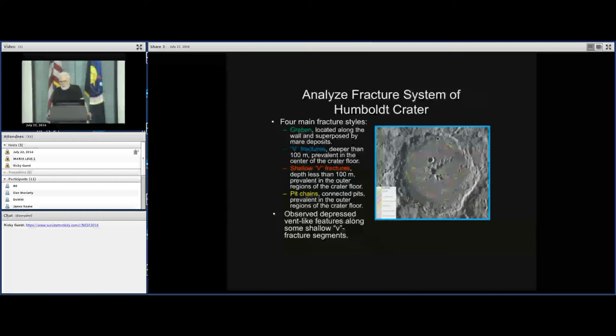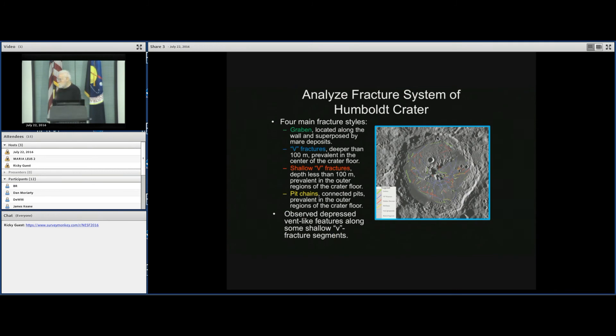Lauren has gone in and looked at the fracture types. These are important to designate the type of faulting that's going on, maybe what's related to magmatic intrusion, what's related to tectonic deformation as the whole floor is uplifted. And she's analyzed four different types of features. Graben, and these are located along the wall, and they're superposed by the mare deposits. V fractures are deeper than 100 meters. These are substantial V fractures. And they're prevalent in the center. Shallow V fractures less than 100 meters are prevalent in the outer regions of the crater floor. And then the pit chains, these are connected pits. And these are dominant in the outer regions of the crater floor. So you also observe, oftentimes, depressed vent-like features along some of the V fractures.